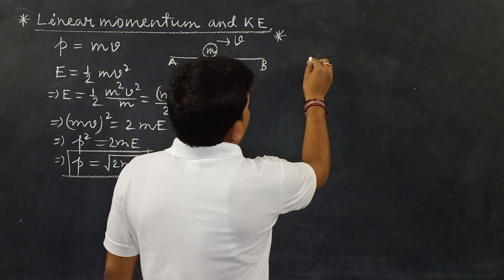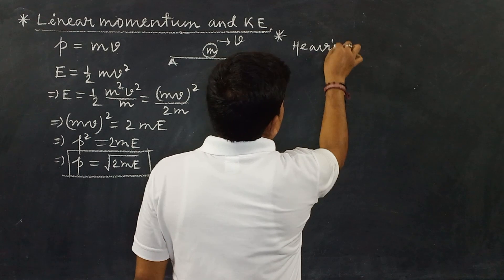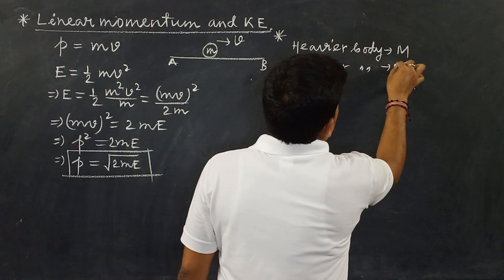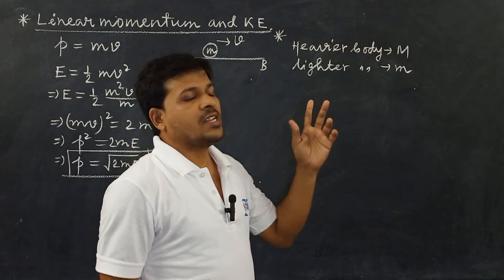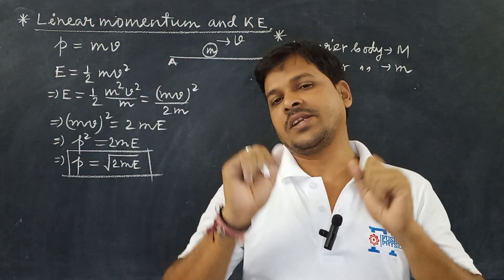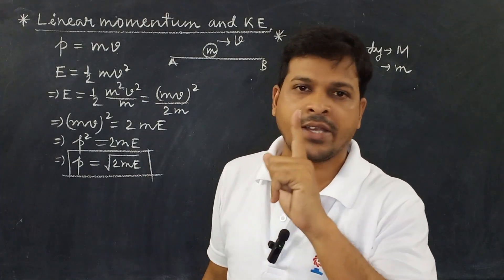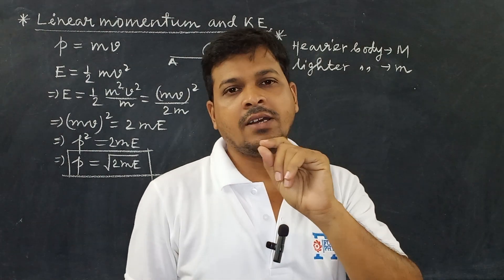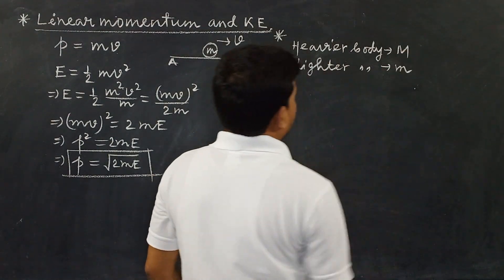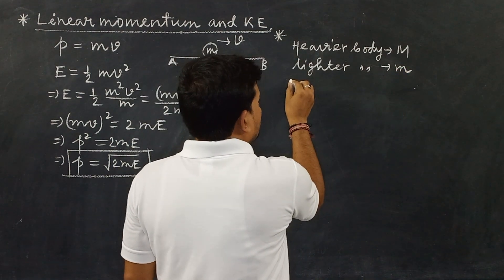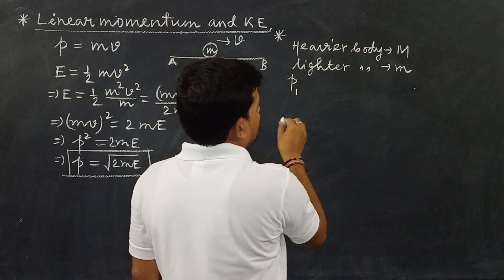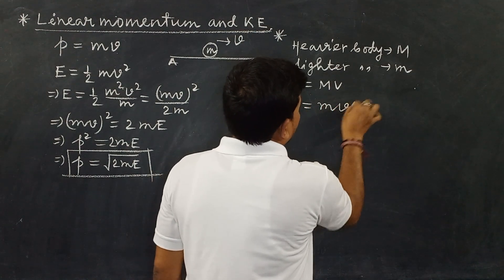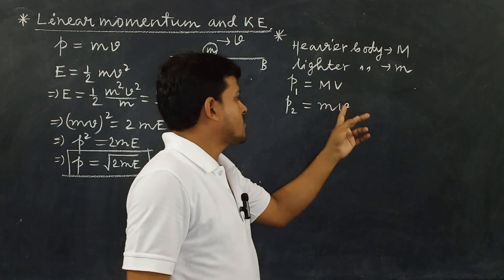The first problem: two bodies — one heavier with mass capital M, and one lighter with mass small m — have equal linear momentum. Which one will have the greater kinetic energy? The linear momentum of the heavier body is P1 equal to capital M times capital V, and for the lighter body P2 equal to small m times small v, where capital V is the velocity of the heavier body and small v is the velocity of the lighter body.